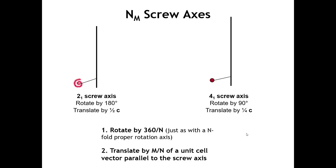What about screw axes? A screw axis combines two operations: first a rotation by 360 divided by N, where N is the order of the axis, followed by a translation by a certain fraction of the unit cell vector parallel to the screw axis. For a 2 sub 1 screw axis, the rotation is 360 divided by 2, or 180 degrees, and the translation is 1 divided by 2 — one half of the unit cell vector parallel to the screw axis. So we rotate by 180 and translate by one half C.